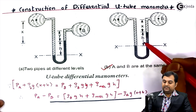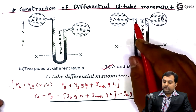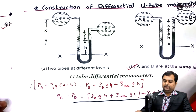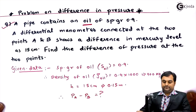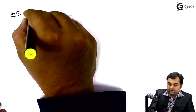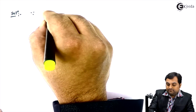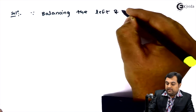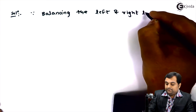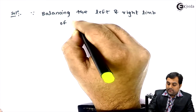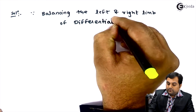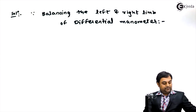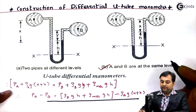As mentioned in the figure, height h is given in the problem. We will balance the differential manometer to get the difference in pressure. For the solution: balancing the left and right limb of the differential manometer — we refer to the second figure.